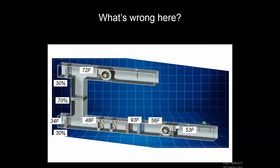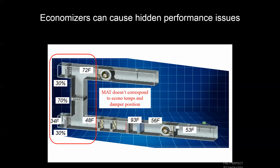Back at the BAS workstation — now understanding that the economizer operates on a continuum of modes — this graphic screen is a snapshot along the economizer profile. We can see that with 70% return air and only 30% outside air at these conditions, the mixed air temperature should be much closer to the return air condition. This exposes competing control loops: the system is now using preheat and then cooling that air back down, showing how economizer issues can have downstream trickle effects throughout the system.